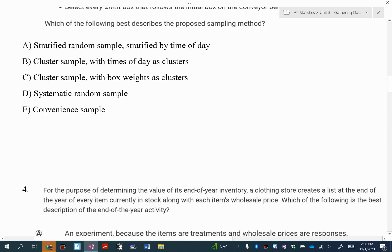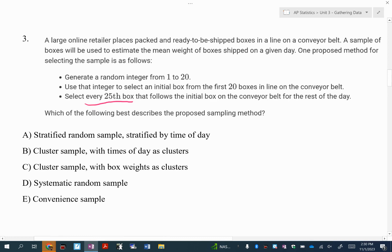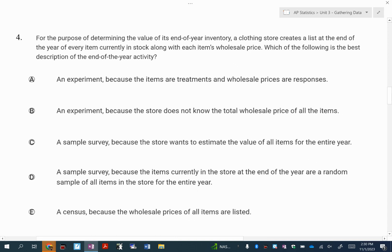Now we all did actually pretty well on number three, so I'm gonna skip that. Again, if you did miss number three, the idea is it's every 25th box. That should be the dead giveaway for systematic.